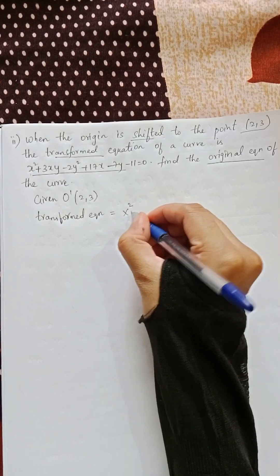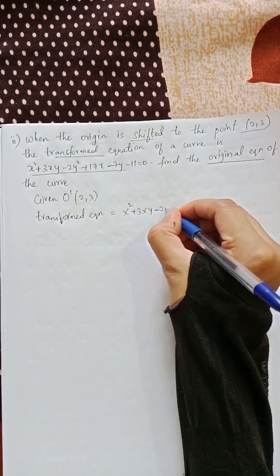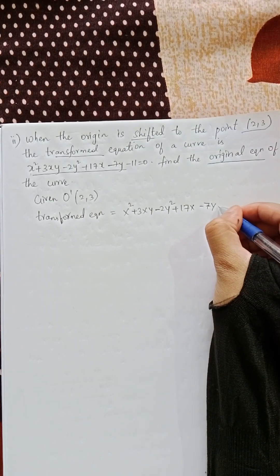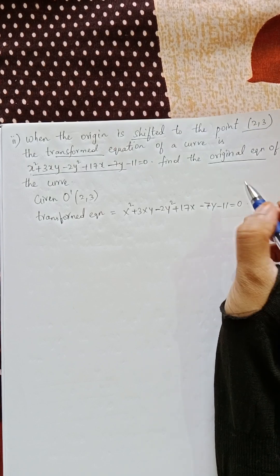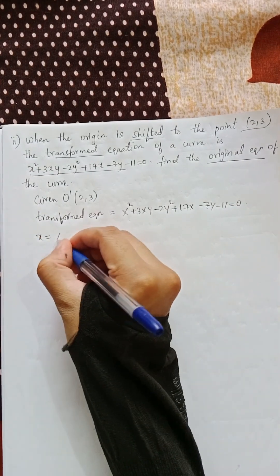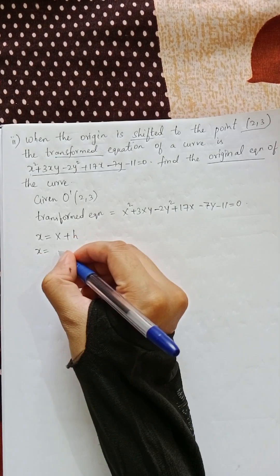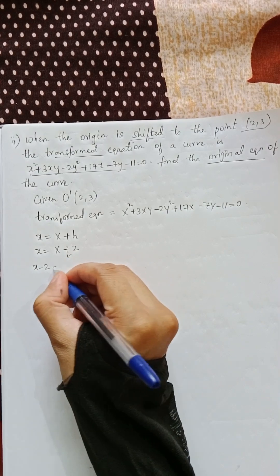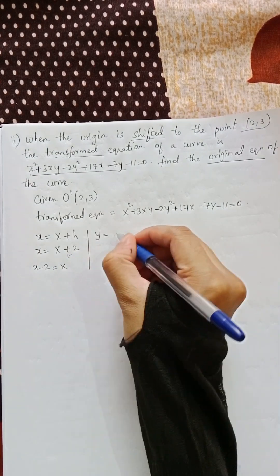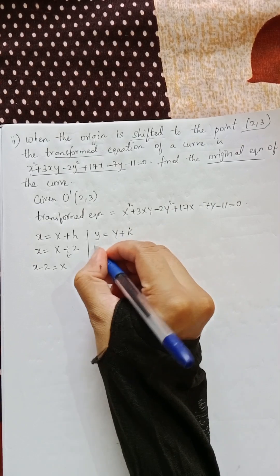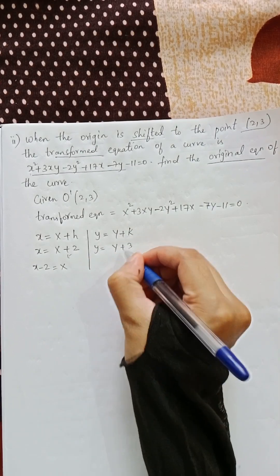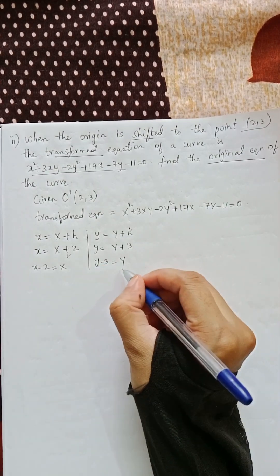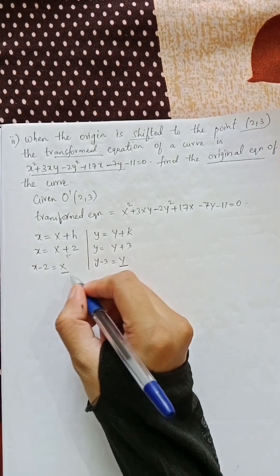The transformed equation is: X² + 3XY - 2Y² + 17X - 7Y - 11 = 0. The formula is: small x = capital X + h, so x = X + 2, which gives X = x - 2. Small y = capital Y + k, so y = Y + 3, which gives Y = y - 3. Now we have the values of capital X and capital Y — substitute into the equation.